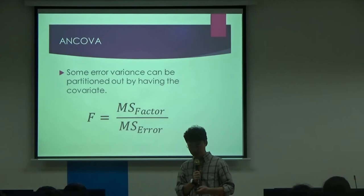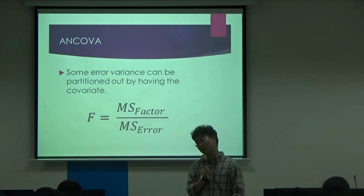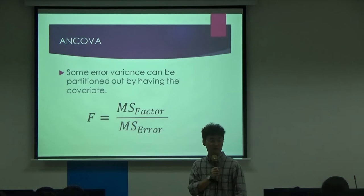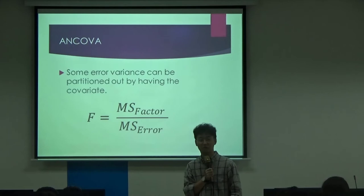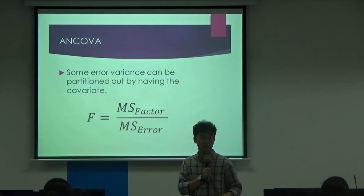This is ideally what happens. Sometimes if you have poor reliability of your measures, after introducing a covariate you may still have a quite large error term and non-significant results. That may be due to poor design of your items, measurement issues, or large measurement error. So ideally, having a covariate can help you reduce the error term from the denominator.